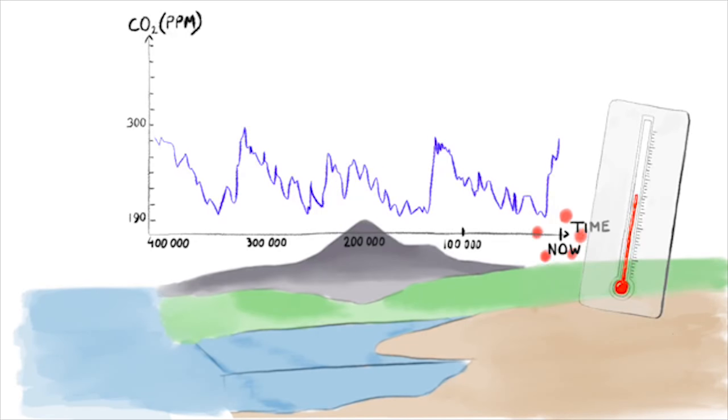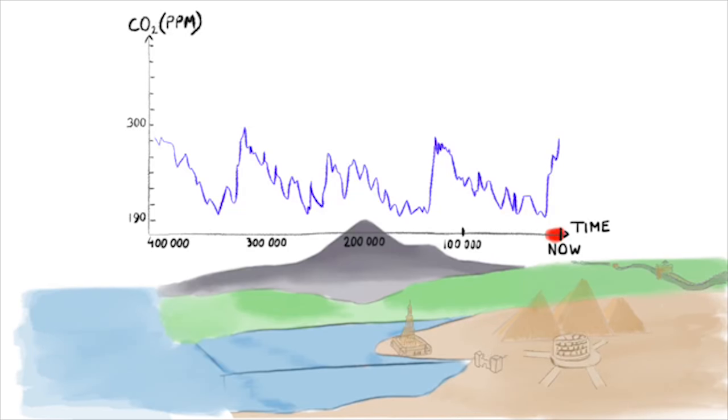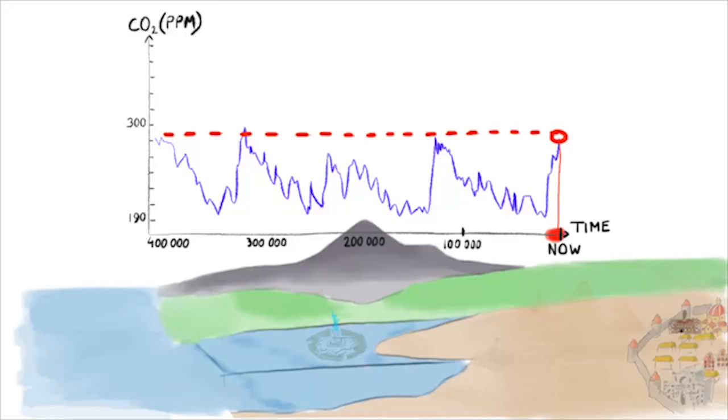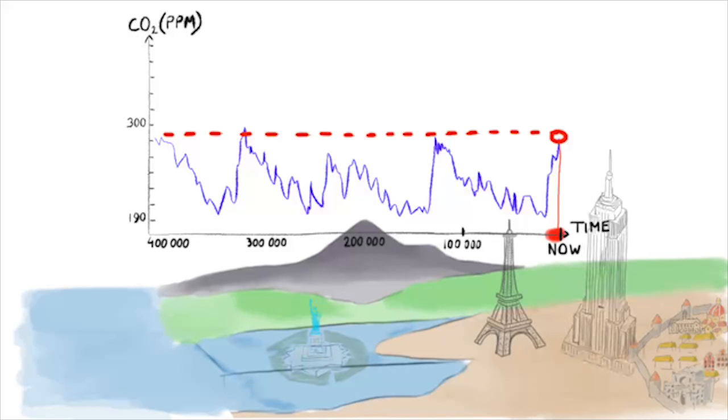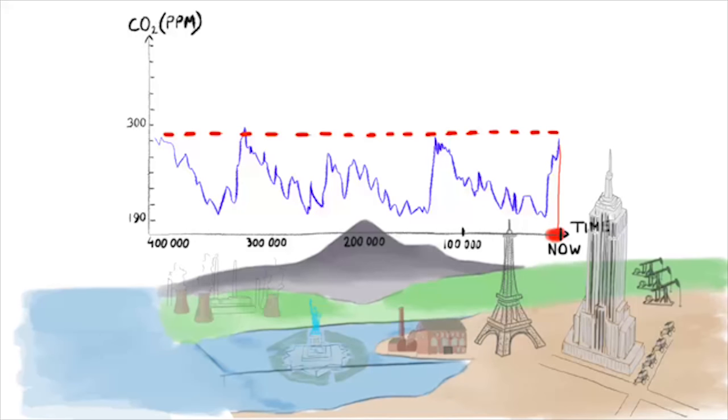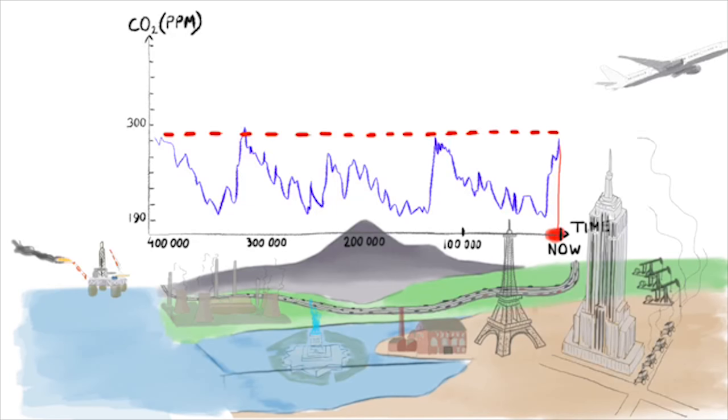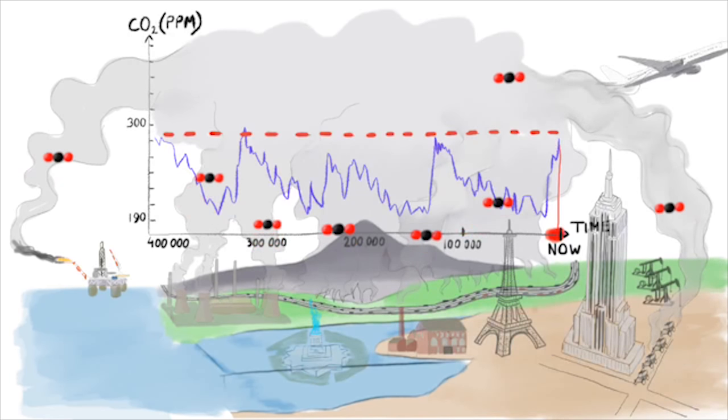Our own civilization came into being during the last interglacial period, in which we are still today. And we lived with a greenhouse gas concentration of 280 parts per million until we realized that we can dig and pump up fossil fuels and burn and combust them to extract energy, emitting greenhouse gases in the process.